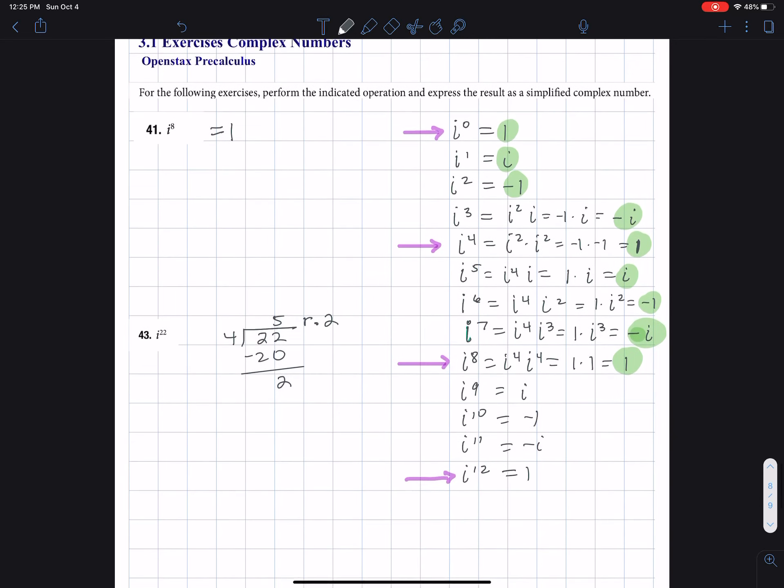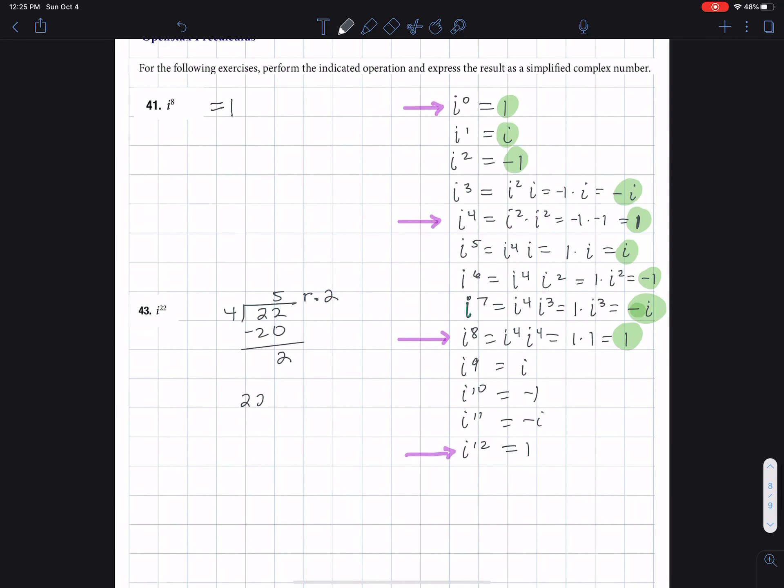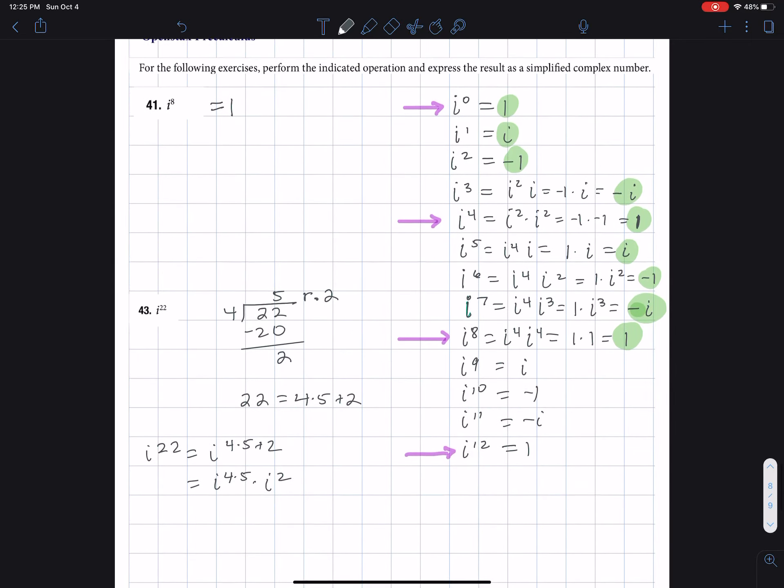So what this means, if I look at this, is that 22 is equal to four times five plus two. And that i to the 22 is equal to i to the four times five plus two. So that's i to the four times five, times i squared.